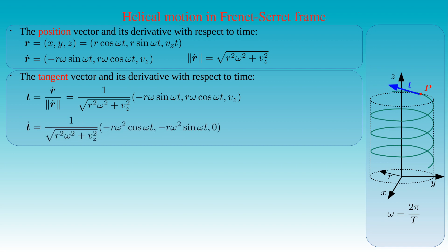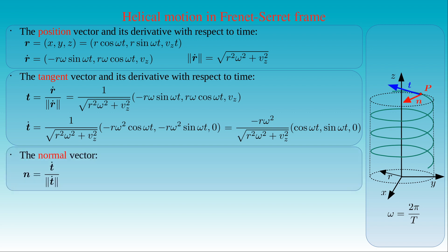Differentiating the tangent with respect to time gives T-dot equal to 1 over the square root of R squared omega squared plus vz squared, times the vector with components minus R omega squared cosine of omega t, minus R omega squared sine of omega t, and zero. Factoring out minus R omega squared, T-dot becomes the ratio of minus R omega squared to the square root of R squared omega squared plus vz squared, times the vector with components cosine omega t, sine omega t, and zero. The normal n of the helix is T-dot divided by its length, giving the vector with components minus cosine omega t, minus sine omega t, and zero. Since n is the normalized derivative of the tangent T, the vectors T and n are perpendicular to each other, so their scalar product vanishes.